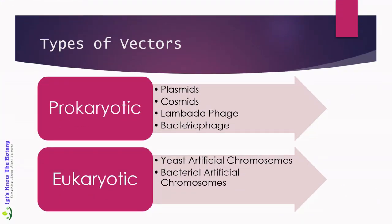There are mainly two types of vectors: vectors found in prokaryotic cells and vectors of eukaryotic cells. From the prokaryotic type of vectors, plasmids, cosmids, lambda phage, and bacteriophages are included. In this particular lecture, we are going to discuss the prokaryotic vectors — plasmids, cosmids, and lambda phage.